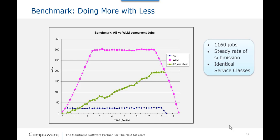Balanced systems that are not overutilized function more efficiently by accomplishing more with less. This benchmark measured the time and resources required to process over a thousand jobs. The results demonstrate how Throughput Manager initiators run substantially less concurrent work — less than one-tenth — yet get everything done sooner. While WLM starts more work, Throughput Manager completes more work, meaning Throughput Manager initiators do more with less.